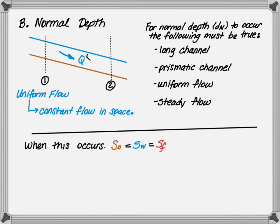When all this is true, the bed slope is equal to the water surface slope, which is equal to the friction slope. And the Manning's equation can be rewritten by changing the friction slope, which is impossible to measure, with the bed slope, as shown.